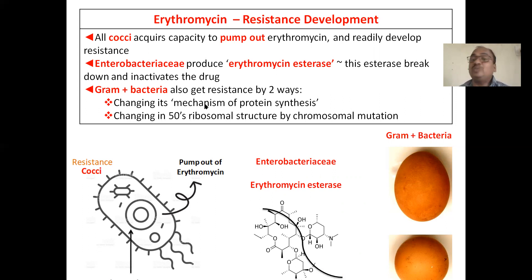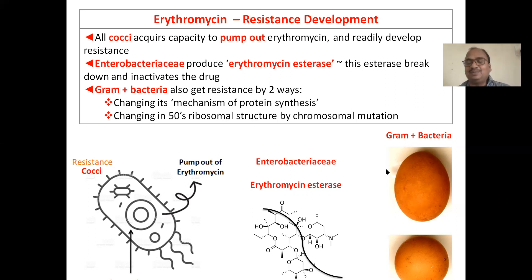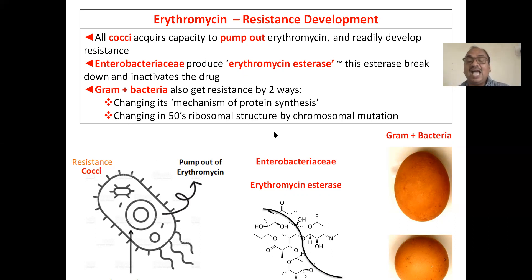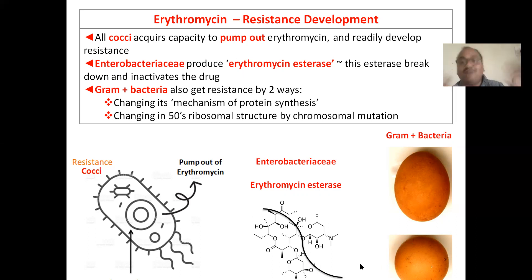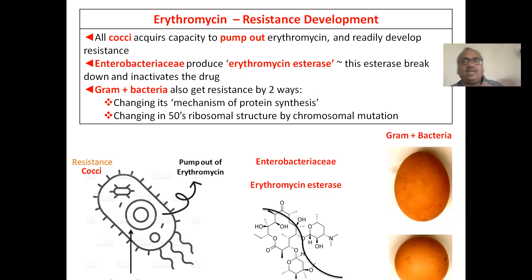Gram-positive bacteria develop resistance by changing the shape of their ribosome. Since erythromycin recognizes the egg-shaped ribosome, when bacteria alter the ribosome shape to round or triangular, erythromycin cannot recognize the target and therefore does not enter to inhibit protein synthesis.